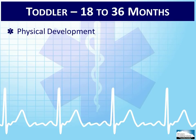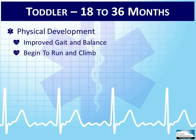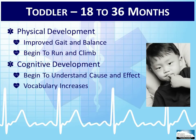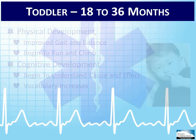Physical development in the 18 to 36 month range gives the child improved gait and balance. They begin to run and climb on all available furniture and surfaces, increasing their risk of injuries due to falls. They begin to have a better understanding of cause and effect. Children might still think their injury or illness is a punishment, so it is important to reassure the child on a regular basis. The EMT should be able to obtain additional information from the child because of an increased vocabulary. This age group dislikes separation from their parents, and keeping the parents involved will probably encourage cooperation.